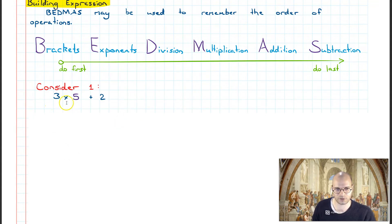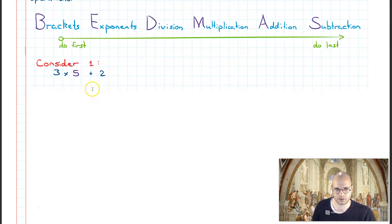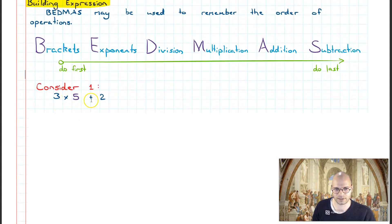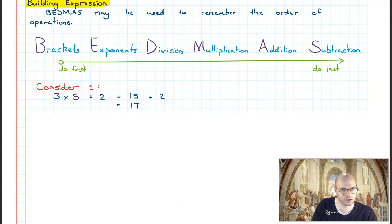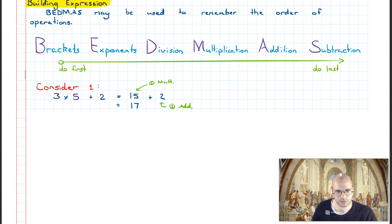Now consider if we have 3 times 5 plus 2. The operations we see here are multiplication and addition. Unpacking what we have with BEDMAS, we know that multiplication is going to come first and then addition. So evaluating this expression, firstly we're going to go 3 times 5 which gives us 15, plus the 2, and then taking care of the addition: 15 plus 2 is 17. The first operation we do is multiplication, the second is addition, as defined by BEDMAS.